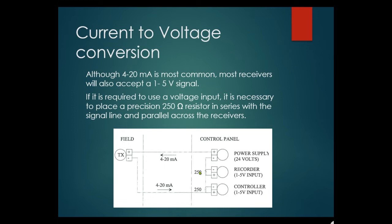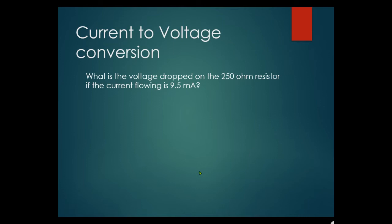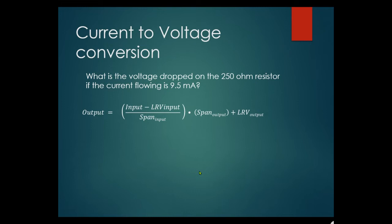If you have other than 250 ohms it won't work correctly. Also, if you're going to put on a communicator, you need a minimum 250 ohm resistance on a loop so that communicator can actually function. Current-to-voltage conversion: what is the voltage dropped on the 250 ohm resistor if the current flowing is 9.5 milliamps? You can use the input-output formula or simply Ohm's law — if you know the milliamps and the ohmic value, you can calculate the voltage.